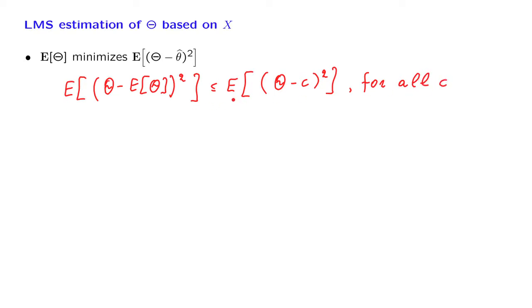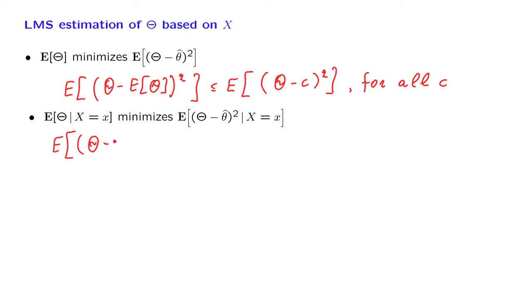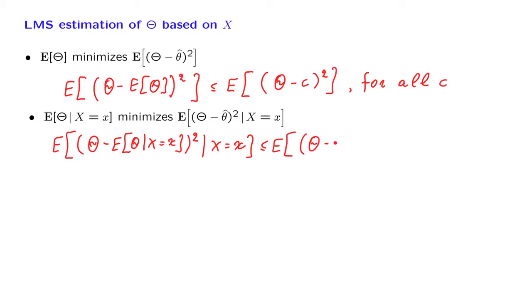Now let us take this inequality and translate it into our more interesting context where we have an observation available. Once more, the conditional expectation minimizes the mean squared error. What this means is that the expected value of theta minus the estimate — namely the conditional expectation — squared, in this conditional universe in which we live, is less than or equal to the mean squared error that we would have obtained if we had used any other estimate in the place of the conditional expectation.